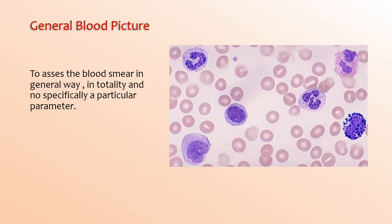General blood picture means to assess the blood smear in a general way, in totality, and not specifically a particular parameter. This includes the status of red blood cells, white blood cells, platelets, and any apparent findings in the smear. Then go into details of the various cells.